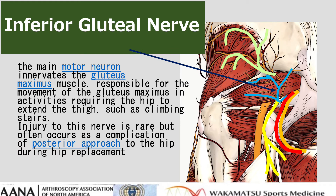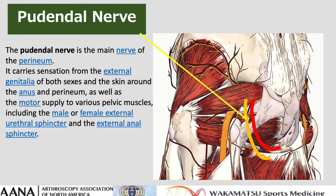The inferior gluteal nerve is the main motor nerve innervating the gluteus maximus muscle, which is responsible for movement of the gluteus maximus in activities requiring hip extension of the thigh, such as climbing stairs. The pudendal nerve is the main nerve of the perineum. It carries sensation from the external genitalia of both sexes and the skin around the anus and perineum, as well as providing motor supply to various pelvic muscles.